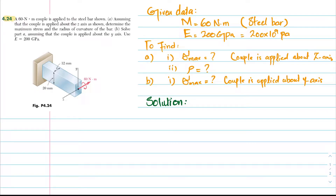Welcome back. Problem 4.24. In this problem, it is given that a 60 Newton-meter couple is applied to a steel bar as shown in the figure. In part A, assuming the couple is applied about the Z axis as shown, determine the maximum stress and radius of curvature of the bar. In part B, solve part A assuming the couple is applied about the Y axis. Use E equal to 200 GPa. The given data: M = 60 N·m and E = 200 GPa, which is 200 × 10⁹.